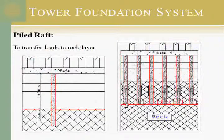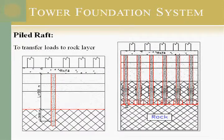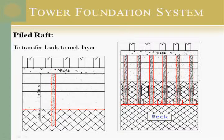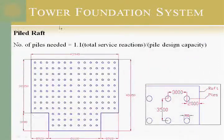So we switched to the pile raft system. The first step in the pile raft procedure is to calculate the pile capacity. To do that, we need to know the surrounding rock, the friction with the rock, and how we are going to transfer the load from the raft through the piles to a stiffened strata of the rock.